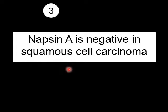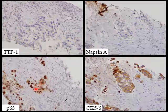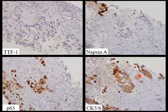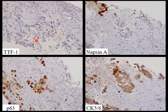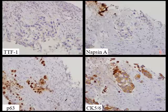Third must-know fact: Napsin A is negative in squamous cell carcinoma. Virtually every good study has shown that Napsin A stains 0% of squamous cell carcinomas, making it very useful to differentiate adenocarcinomas from squamous cell carcinomas of the lung. Here's an example of a squamous cell carcinoma — the bottom panel shows squamous markers P63 and CK56 being positive, TTF1 is negative, and Napsin A is also negative.